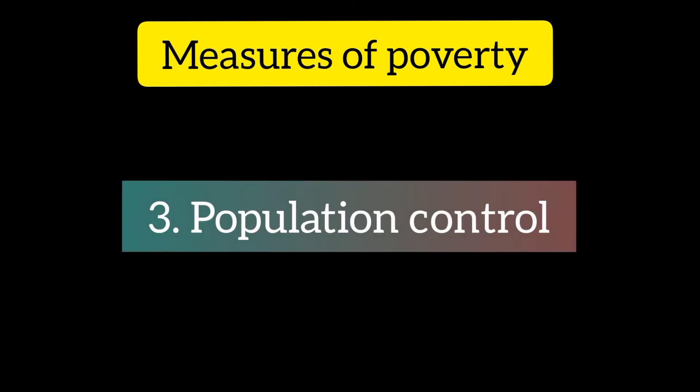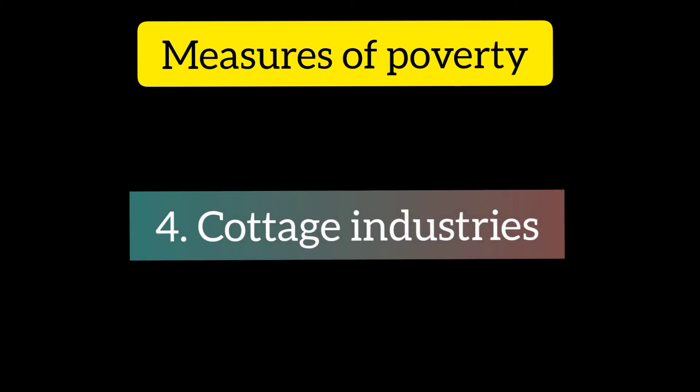Number three: Population Control. Family planning programs should be implemented strictly to control population growth as a measure to remove poverty. The central and state governments have also been spending huge sums of money in this regard.